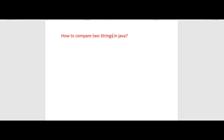As every one of you knows, string is a special class in Java. It's immutable and it's used a lot in every Java programming, starting from simple tests to enterprise Java applications. In this tutorial, we will see different ways to compare two strings in Java and find out when to use the equals or compareTo method.